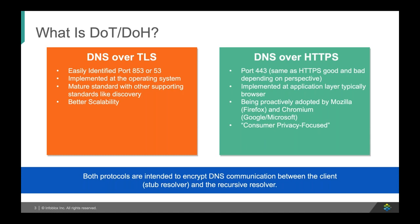If we look at how they're being implemented today, DNS over TLS is most often implemented at the operating system. The advantage here is that all of the applications, including the operating system itself, take advantage of this encrypted DNS channel. Whereas with DNS over HTTPS, we're seeing this implemented at the application layer — primarily with the browser backends themselves, but there's talk of people potentially implementing it directly into applications as well. That's going to add a lot of complexity to troubleshooting resolution for enterprise users.